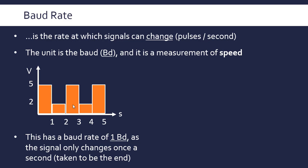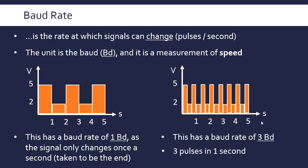If we look at a slightly higher baud rate of three, we've now got three pulses per second. The signal is changing three times within a single second, hence it's got a baud rate of three. It doesn't have to be necessarily a change between high and low.